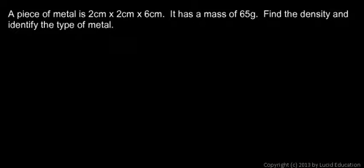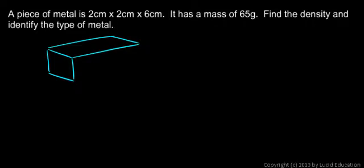In this example problem we're told that a piece of metal is 2 centimeters by 2 centimeters by 6 centimeters. So it might look something like this. It's a rectangular shape and we have 2 centimeters on one side, 2 centimeters on another side, and then the long side is 6 centimeters. We're told to find the density and then using that we can identify the type of metal.